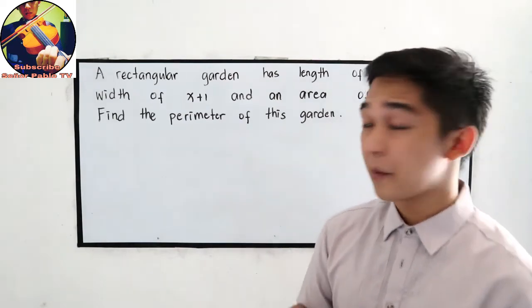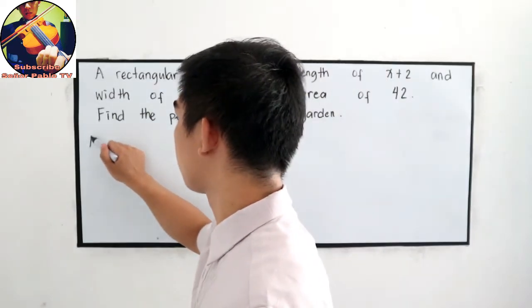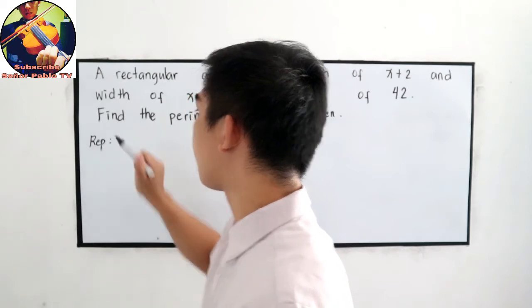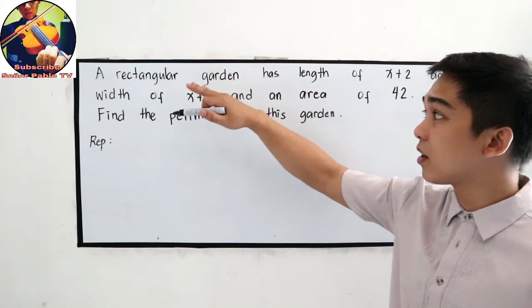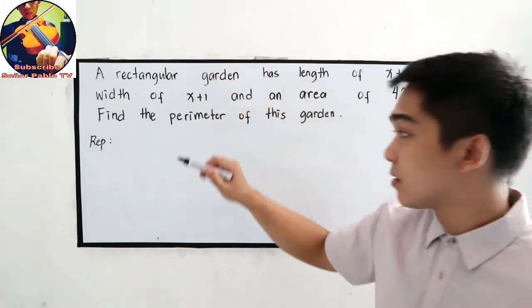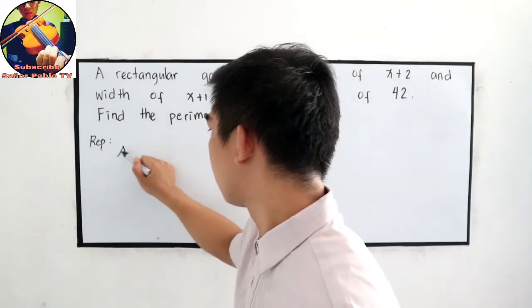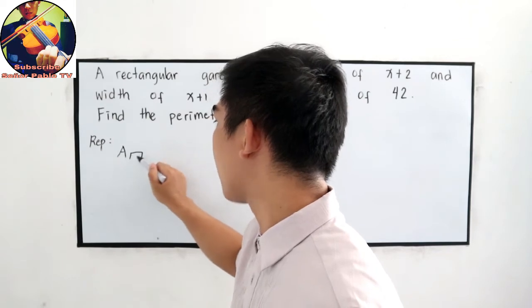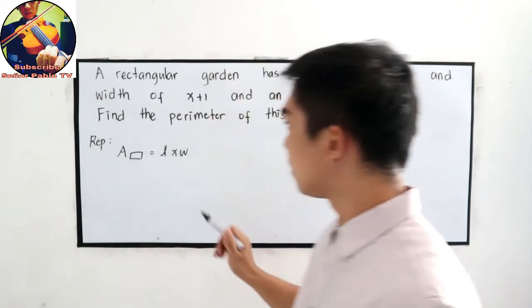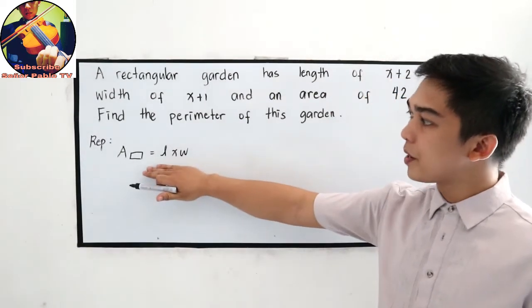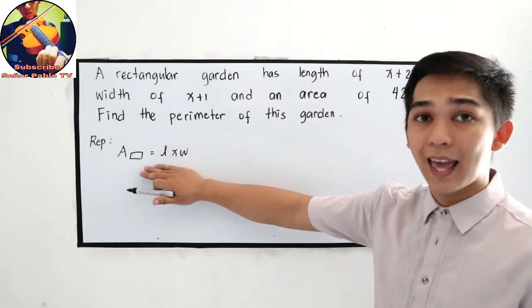So let's start with our representation. We have a rectangle, a rectangular garden. The area of that rectangular garden is equal to length times width. Therefore, in our representation, we need to find the length and the width.